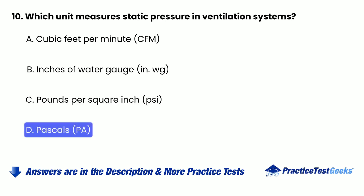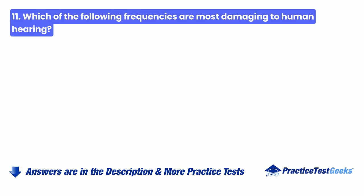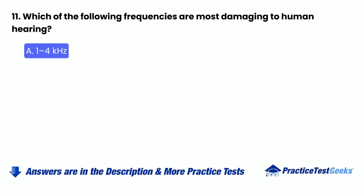Question 11: Which of the following frequencies are most damaging to human hearing? A. 1 to 4 kilohertz.